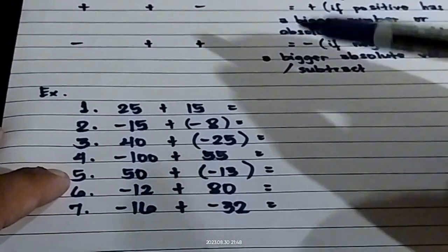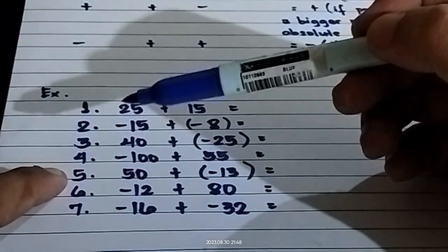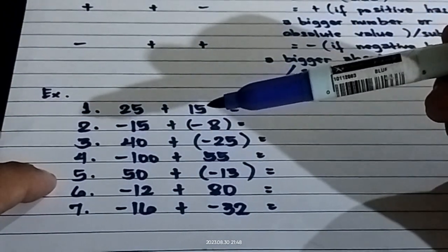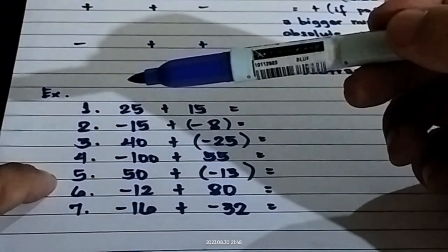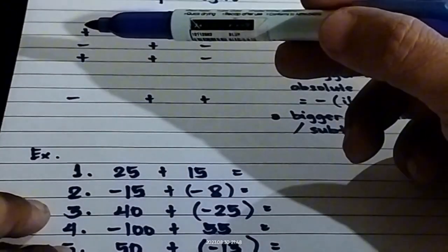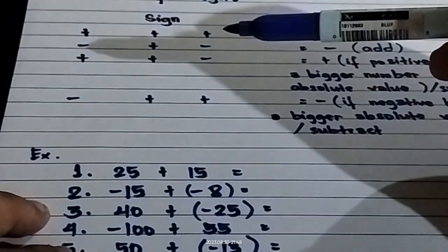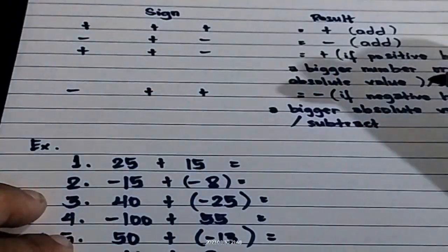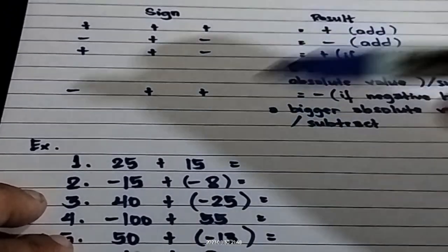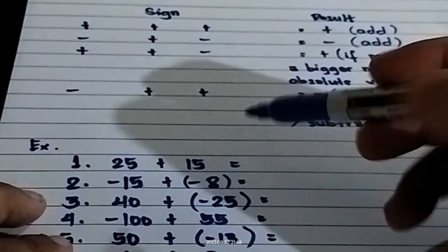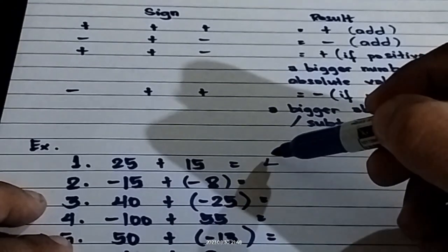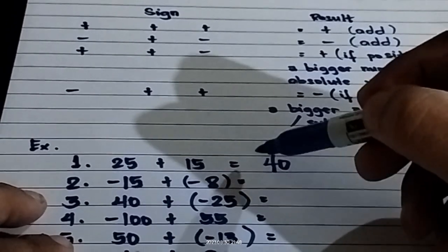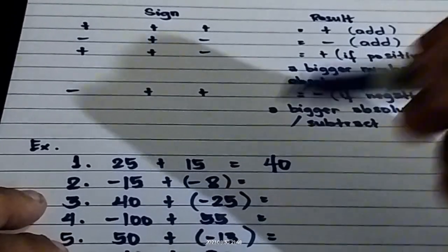Let us answer number one. We have positive 25, and we're going to add positive 15. Based on our first statement, positive plus positive will become positive, and the operation is addition. So 25 plus 15 — the answer is positive 40. You don't need to write the positive sign; it is automatically positive.